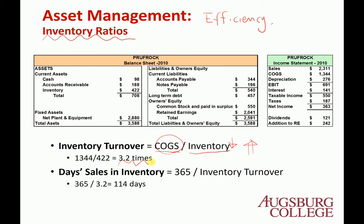If you just see 3.2 times, it's not easy to intuitively understand. So we convert it to a more intuitive measure: the number of days to sell out inventory, called days sales in inventory. It's 365 divided by inventory turnover — so 365 divided by 3.2 equals 114 days. This means that on average, this company holds inventory for 114 days.